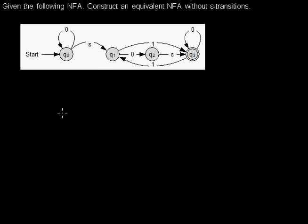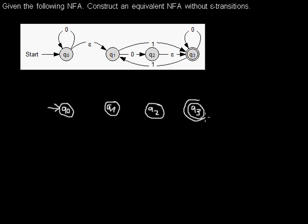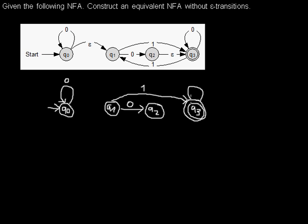If you want to have another automaton without epsilon transitions, it has the same states as the old automaton. Q3 is the final state, marked by two circles. The old transitions with a symbol stay the same: this loop with a zero stays the same, this transition with a zero stays the same, the ones are copied to the new automaton, and you have a one from Q3 to Q1.